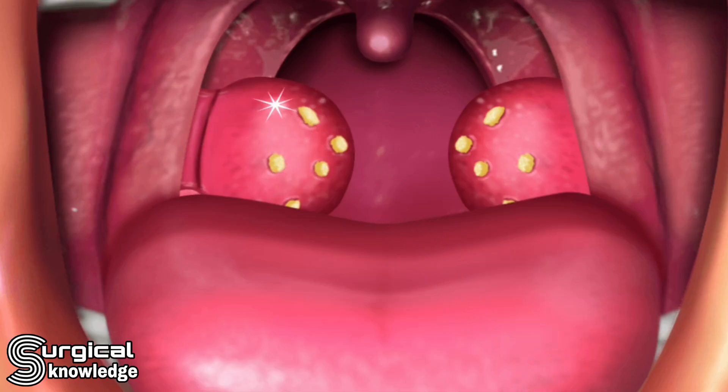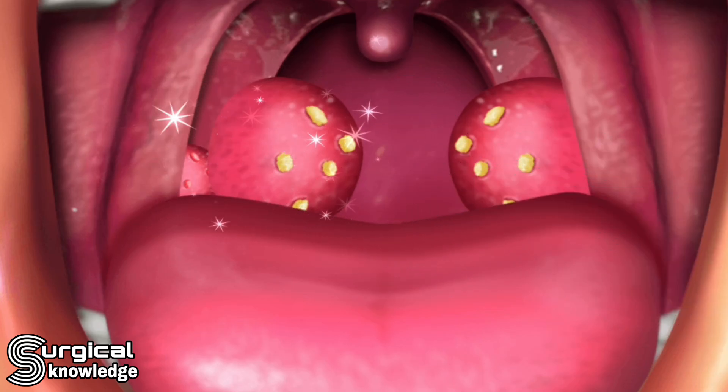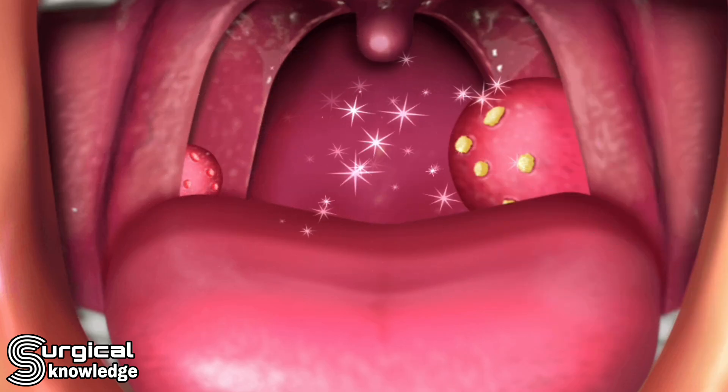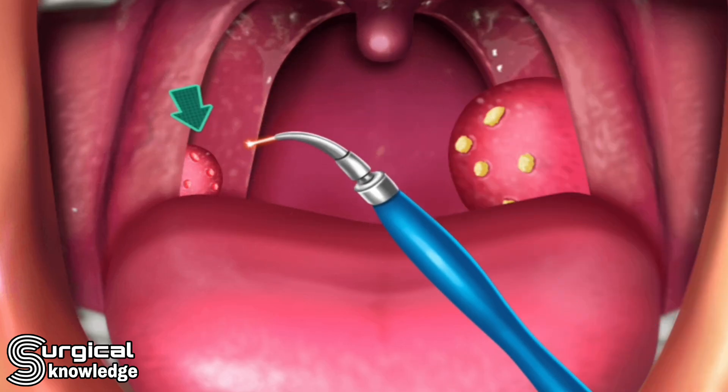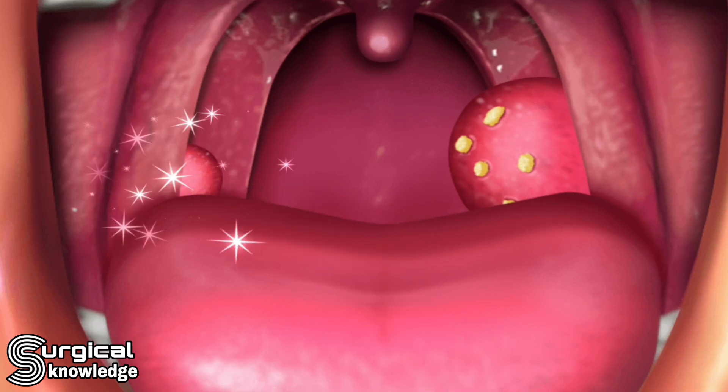Tonsillectomy is a surgical procedure to remove the tonsils. Here is a step-by-step overview of what typically happens during a tonsillectomy.